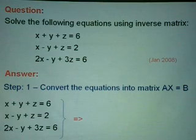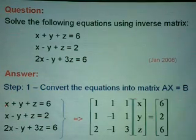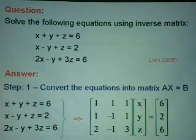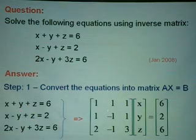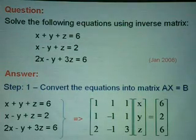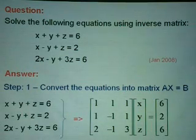The first thing is to arrange the equations starting with x, followed by y and then z. We look at the multiple of x: here it is 1, then 1, and then 2 — so we take out 1, 1, and 2. For the multiple of y, we have 1y, negative 1y, and negative 1y — so we write 1, negative 1, and negative 1. For z, we have 1z, 1z, and 3z — so we write 1, 1, and 3. Then multiply by x, y, z. On the right hand side, we write the numbers 6, 2, 6. That is step number 1.